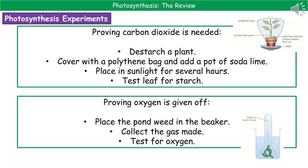To prove that carbon dioxide is needed for photosynthesis, take a de-starched plant and cover it with a polythene bag containing a pot of soda lime. The soda lime absorbs carbon dioxide from the air. Place the plant in sunlight for several hours, then remove the bag and test the leaf for starch. Because the soda lime has absorbed the carbon dioxide, we should find that there is no starch within those leaves.